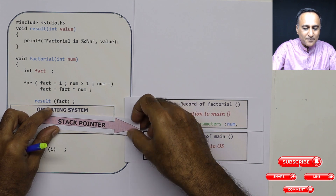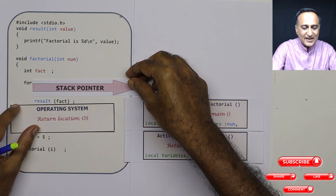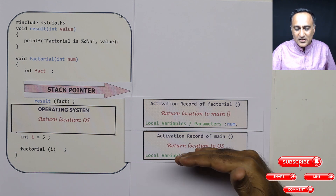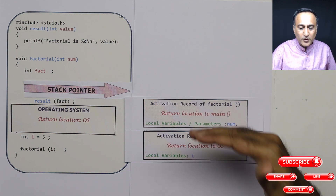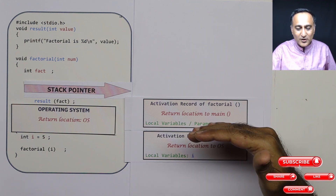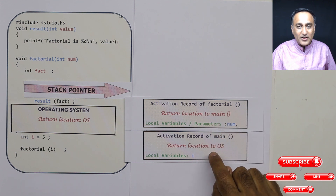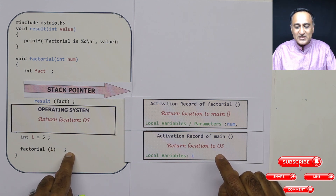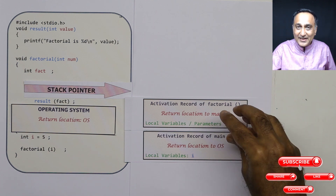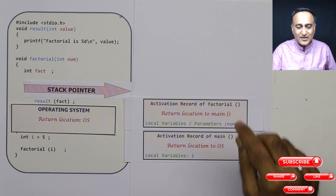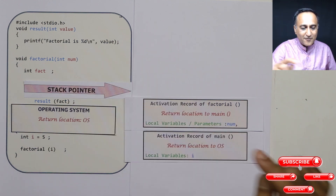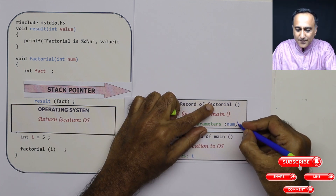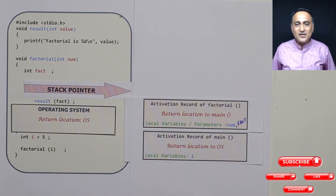Main is at the bottom of the stack. Main in turn calls factorial, so factorial is above main. Factorial's activation record contains the return address indicating where it should come back in main — immediately after the semicolon on the call statement. In addition, the factorial function has a parameter called number and a local variable called fact. These local variables and parameters, number and fact, are part of the activation record.